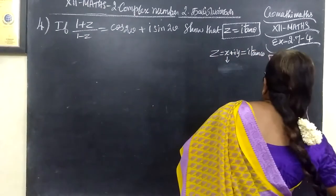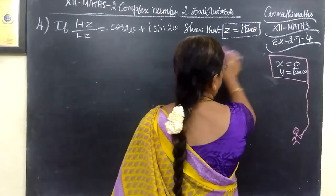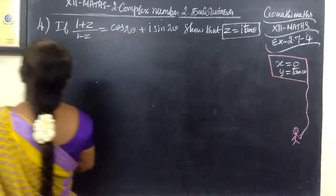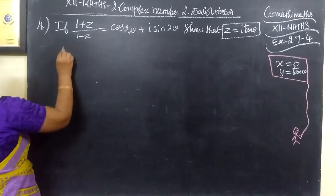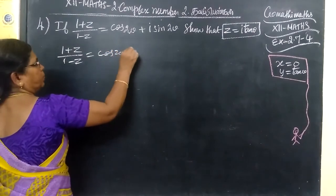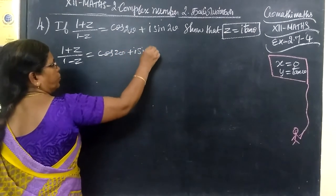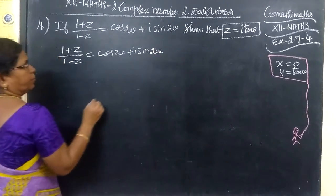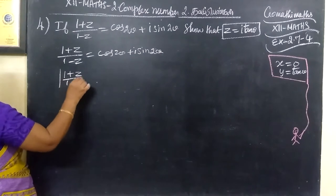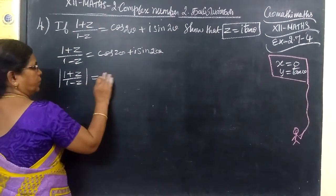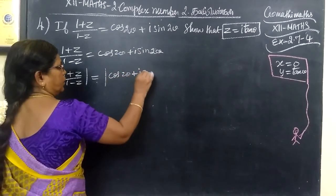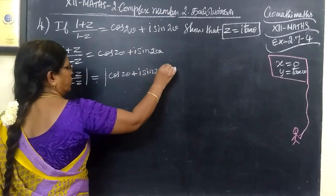Let me do it. (1 + z) / (1 - z) equals cos 2θ plus i sin 2θ. I am taking modulus on both sides. Modulus of (1 + z) / (1 - z) equals modulus of cos 2θ plus i sin 2θ.